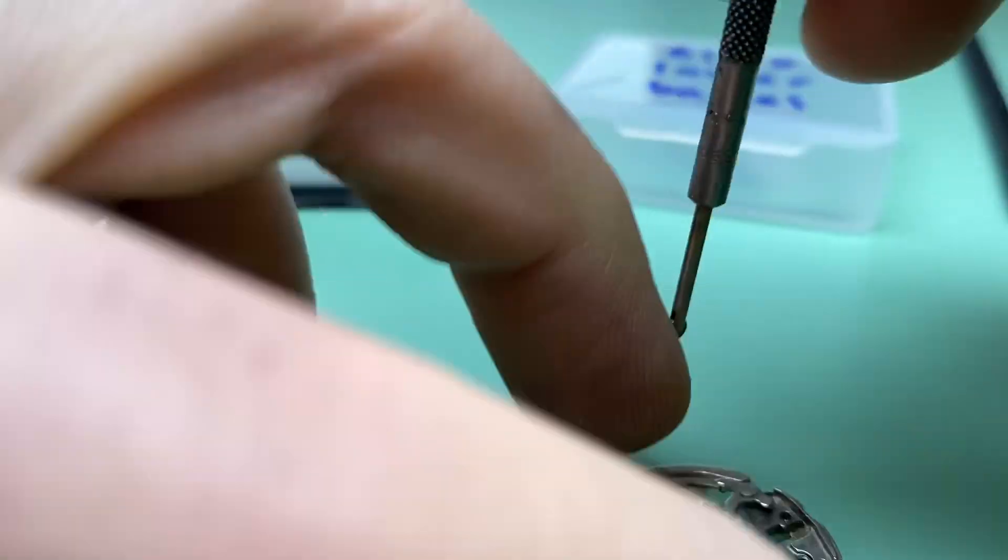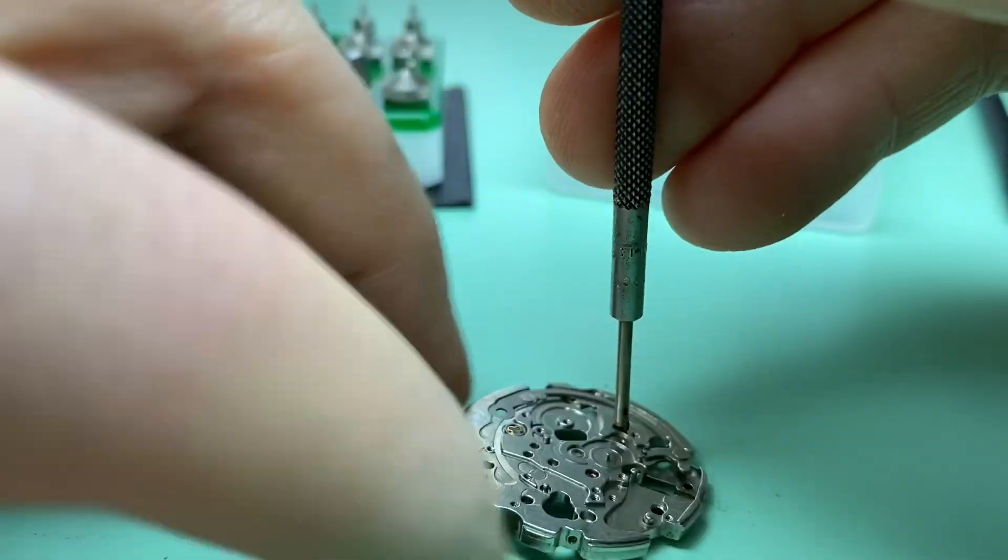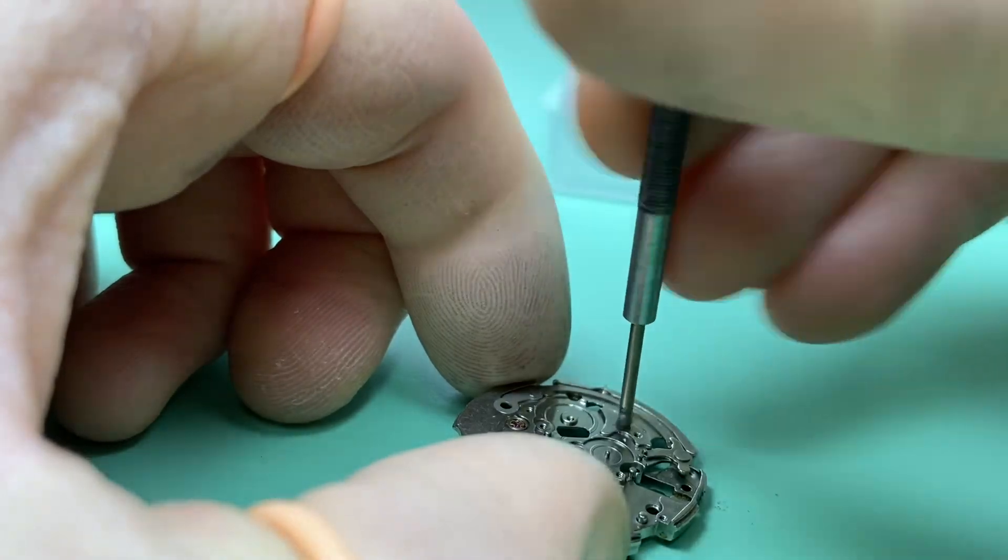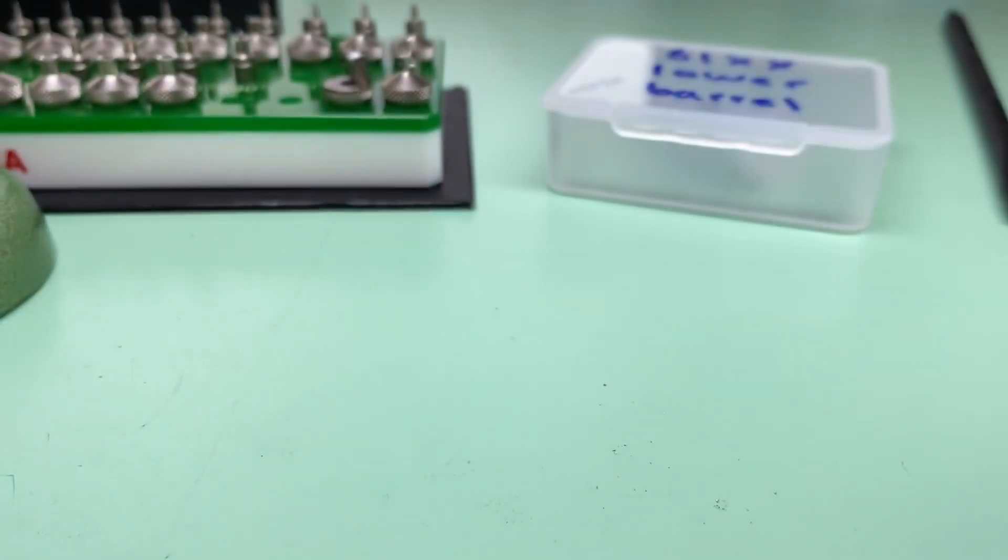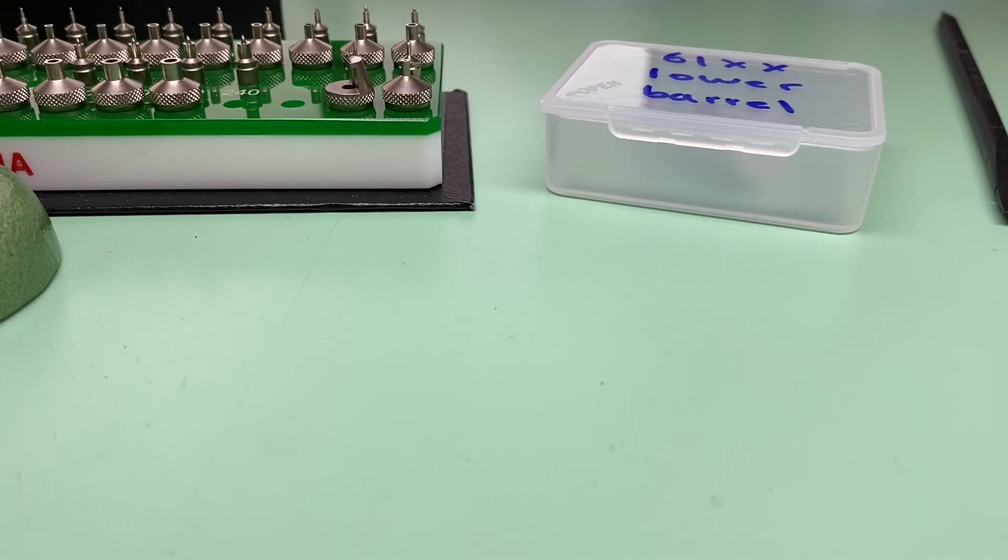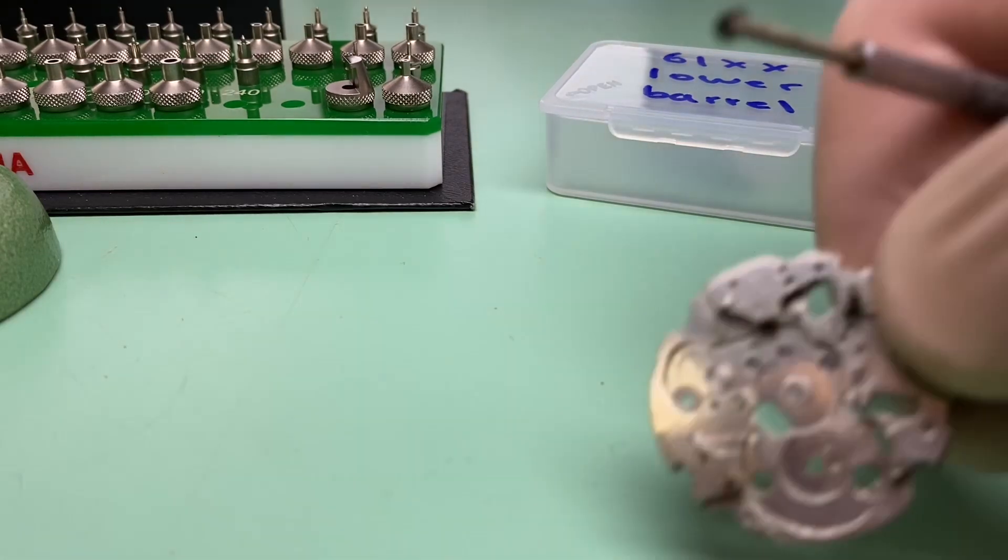We can also do that on the other side as well. Nothing major, just a small little chamfer so that we can receive the jewel. Just excuse me, I'm going to look at that with my eyeglass. Perfect.